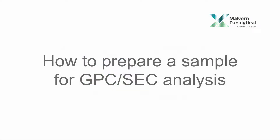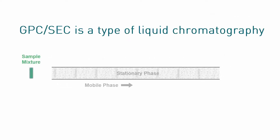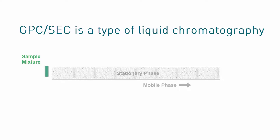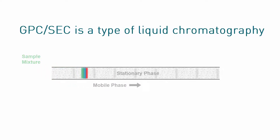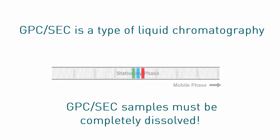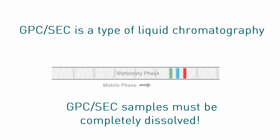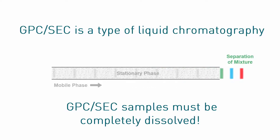How to prepare a sample for GPC-SEC analysis. GPC-SEC is a type of liquid chromatography, which means that a liquid mobile phase is used to move the sample through the system. As such, the technique requires that the sample be completely dissolved into a solution prior to injection. Insoluble portions of the sample will be removed from solution one way or another and will not be analyzed.